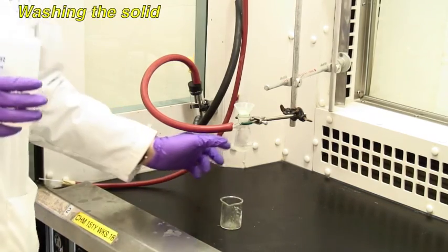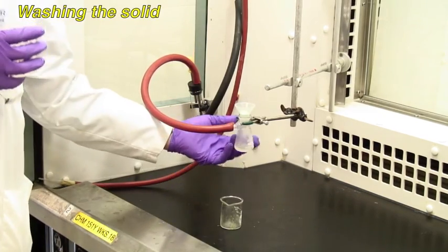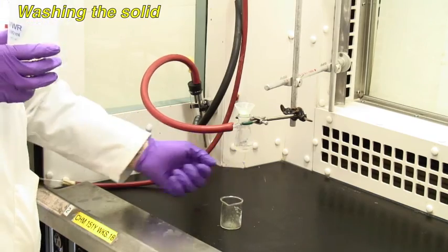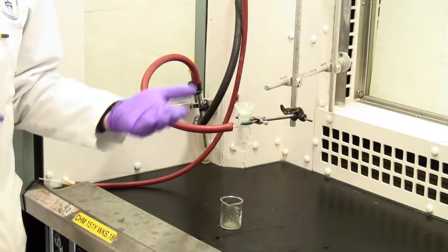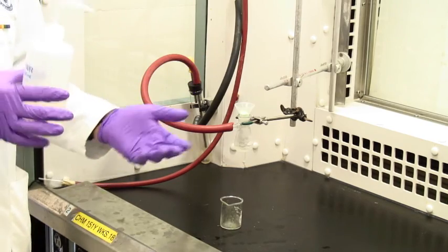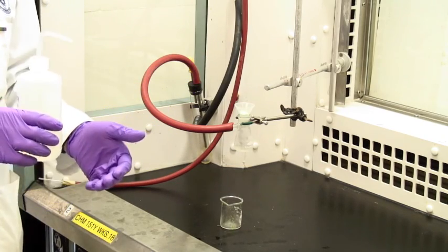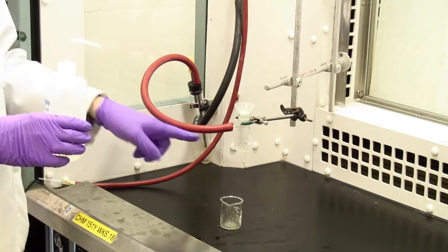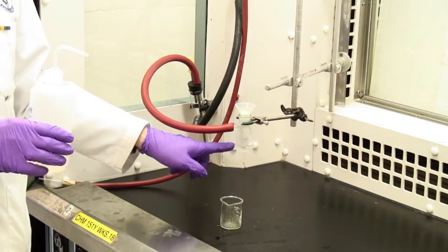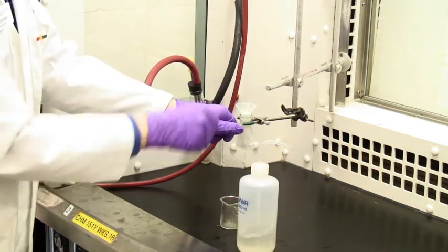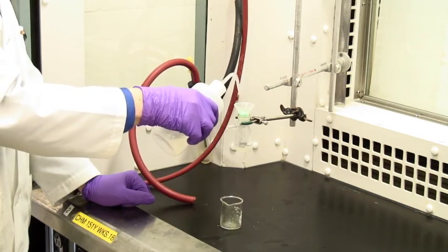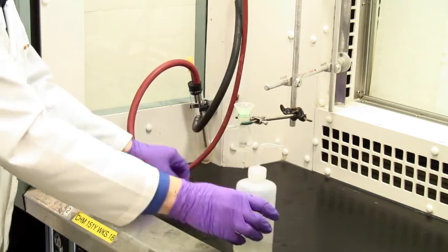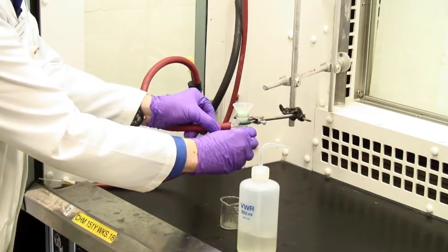Now you may wish to remove any traces of the filtrate and any dissolved species in it. The protocol may tell you to wash the solid on the filter using water or some other solvent. In this case, once the filtrate has passed into the flask, you disconnect the vacuum like this. You don't need to turn it off and add the wash liquid and then apply suction.